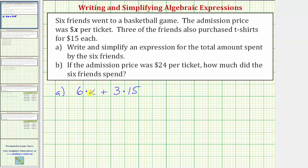So again, six times X is the amount spent on the six tickets, and three times 15 is the amount spent on the three T-shirts.